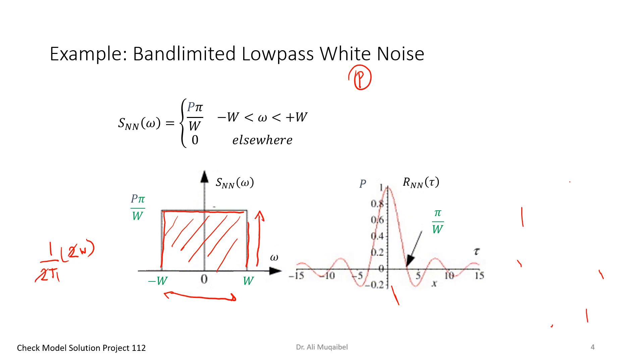The area of this rectangle is the width, which is 2W, times the height. How much should the height be to make the answer equal to P? To cancel the π and W, we get P/W up and W down, so they cancel each other and we have P. This is why the magnitude here is P times π over W. If you multiply them by each other, you get 2π times W times the height, which is Pπ/W. The area is 2π times P because when we find the power, we find the area and divide by 2π to get P.